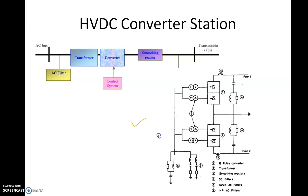Let us see the components of the converter station. In this diagram, the numbered systems are shown and we will go through each quickly. Where number one is written, that is a 12-pulse converter. We also have 24-pulse and 48-pulse converters nowadays — all these are possible. We will see them slowly.